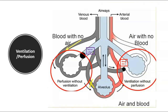Here's a graphic showing exactly what we talked about: ventilation and perfusion. You can see some of the different causes. The center would be a normal unit. On one side, perfusion without ventilation; on the other side, ventilation without perfusion.